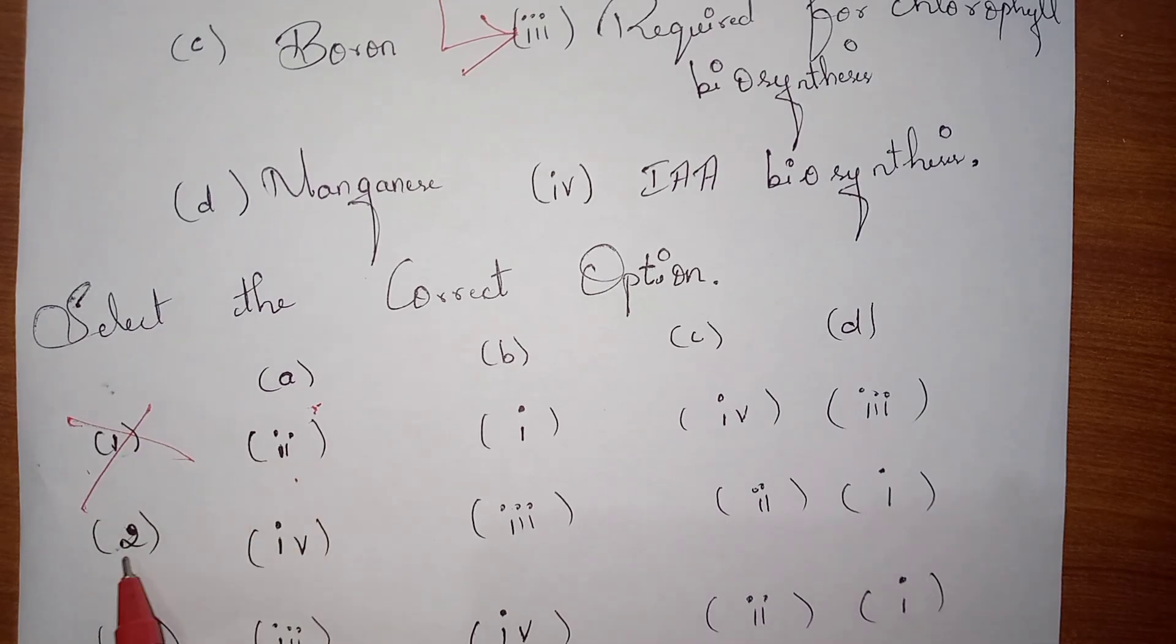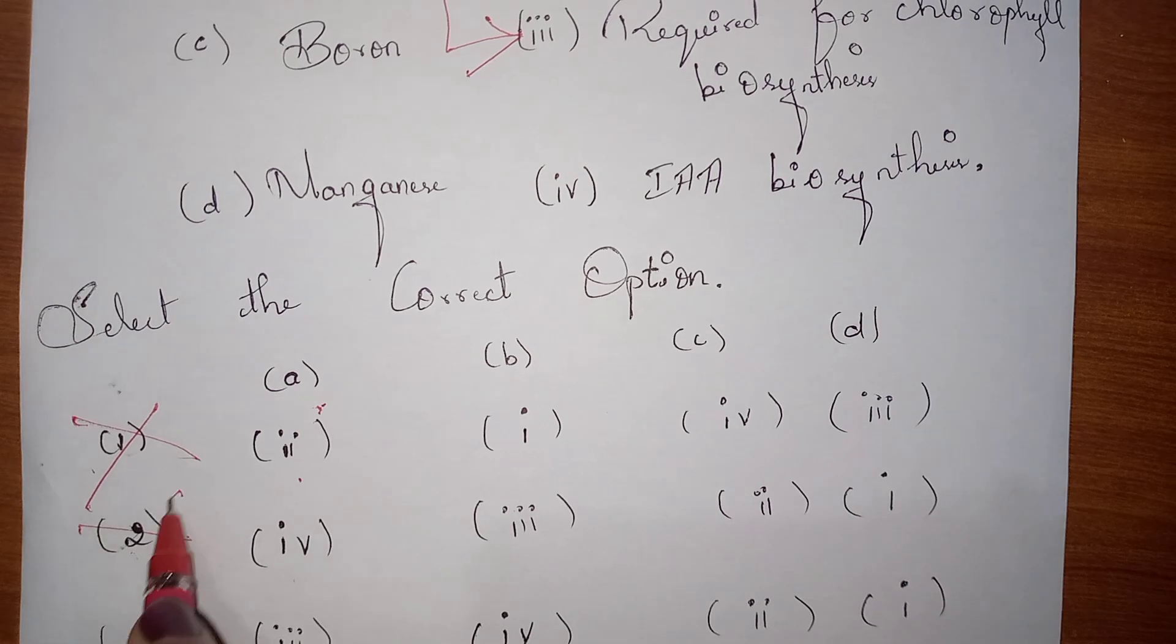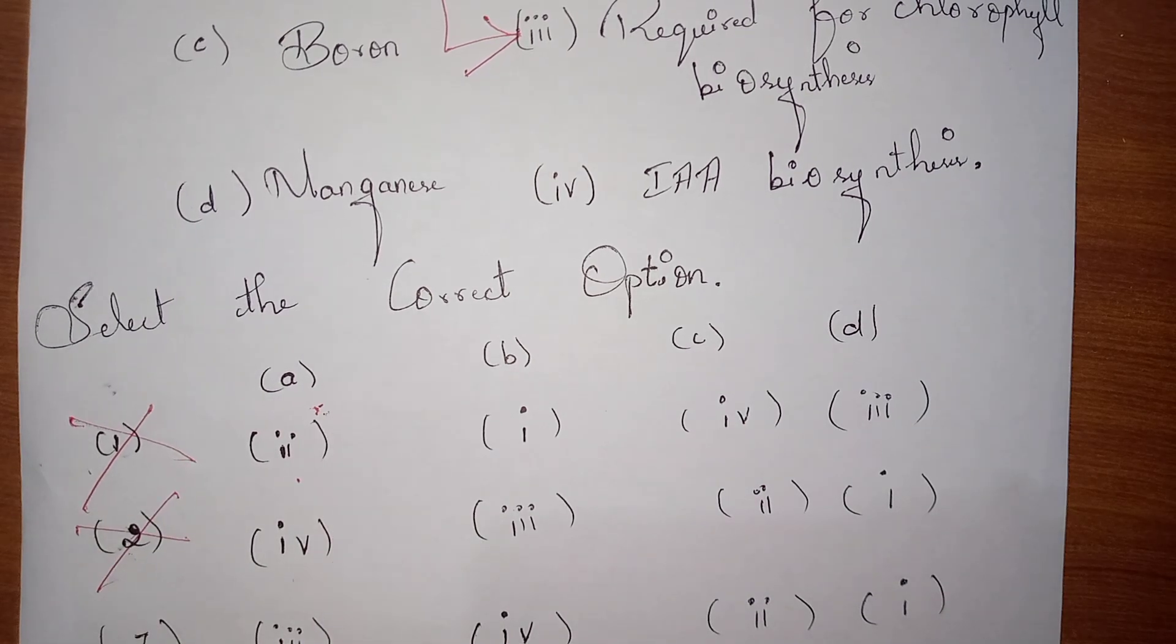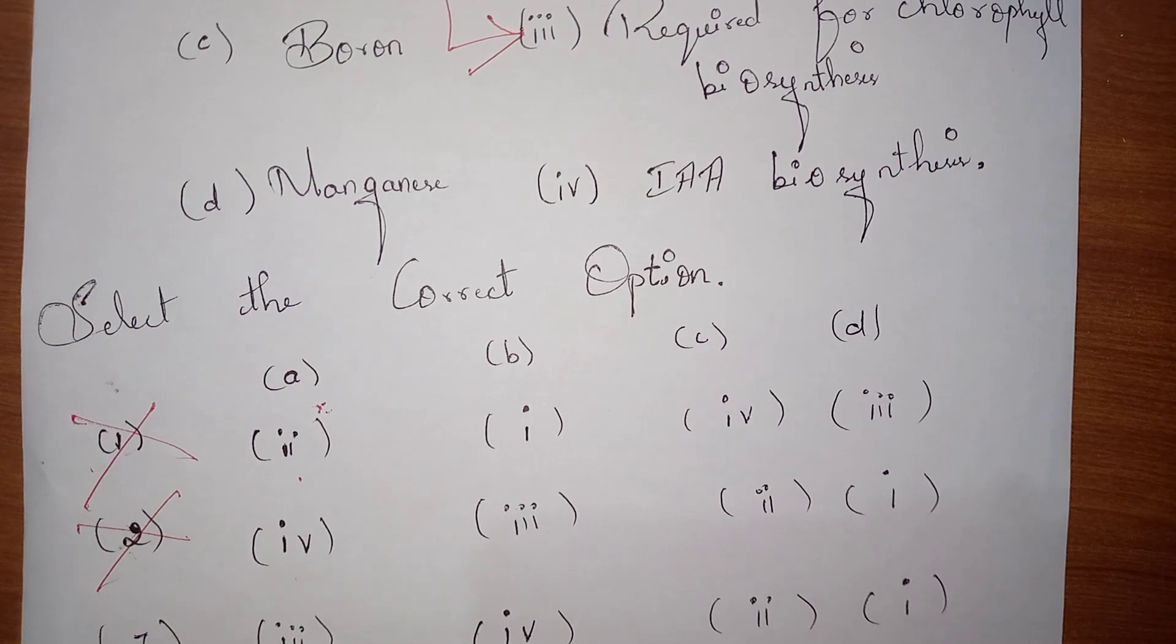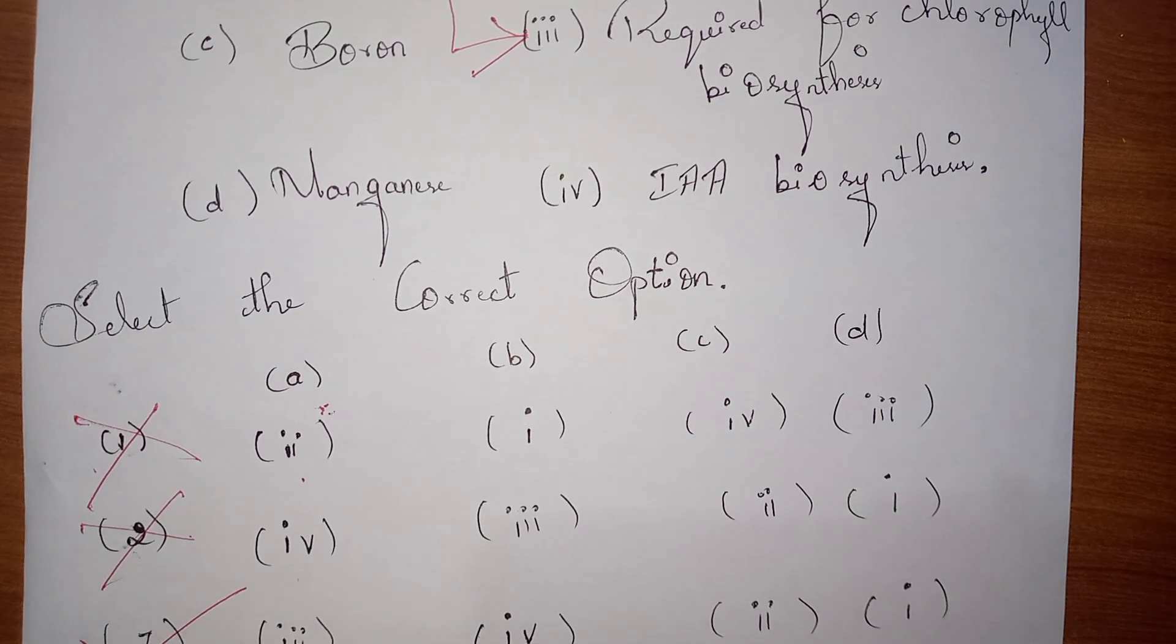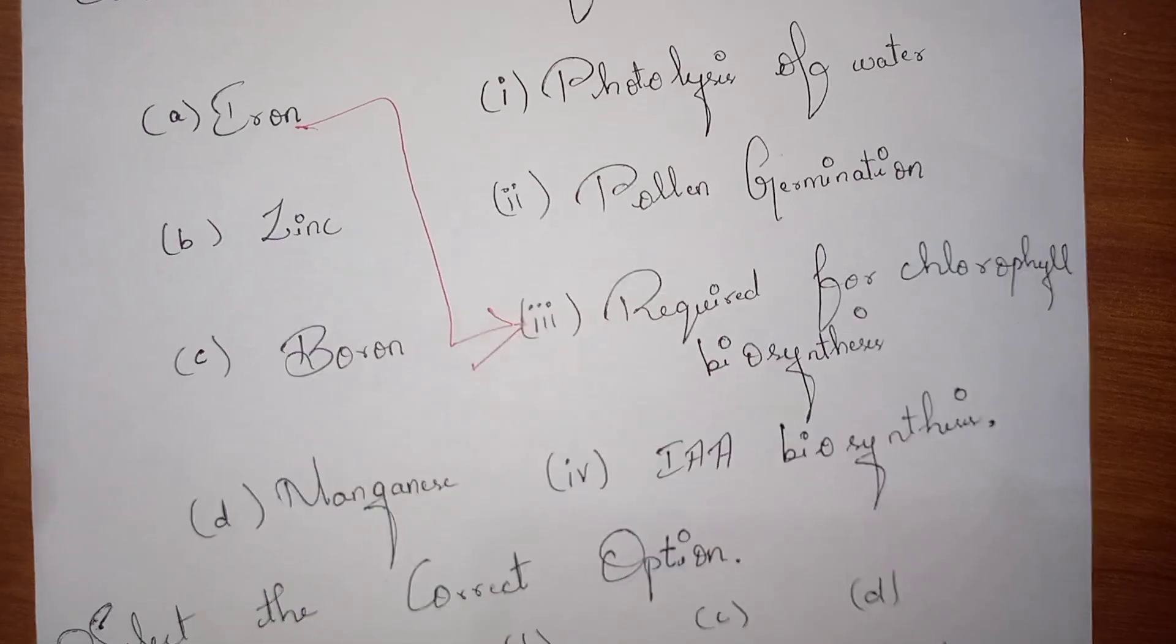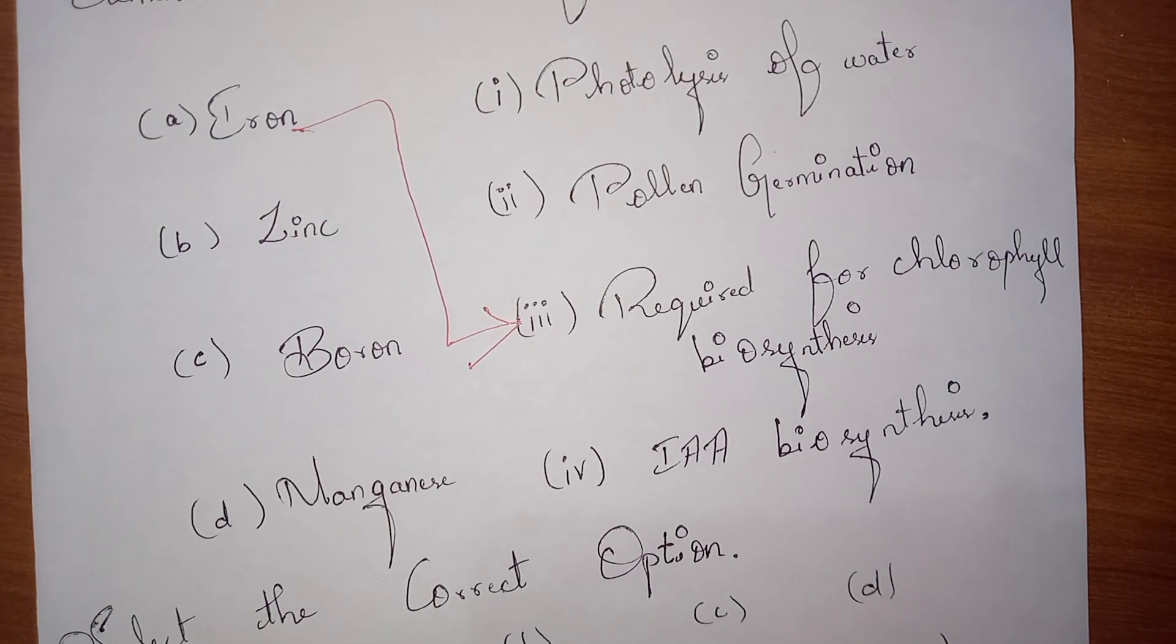For A, they are given 3 in the third option, and in the fourth option for A they are given 4, so this is wrong and this will be the right answer. So let us see. For Zinc, it is 4, that is for Zinc it will give the IAA biosynthesis.